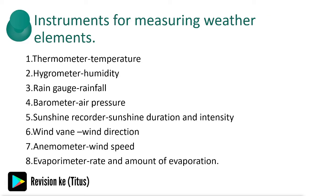The instruments that necessitate the need for a weather station are: a thermometer, used to measure temperature; a hygrometer, used to measure humidity; a rain gauge, used to measure rainfall; a barometer, used to measure air pressure; a sunshine recorder, used to measure sunshine duration and intensity; a wind vane, to measure wind direction; an anemometer, to measure wind speed; and an evaporimeter, to measure the rate and amount of evaporation.